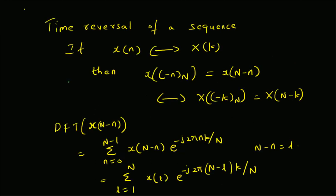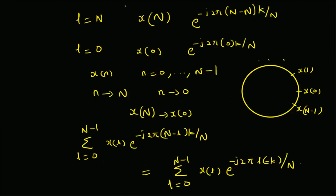To summarize: we have looked at the time reversal property of the DFT. Time reversal of a sequence x[n] which has DFT X[k] is defined by x[-n mod N], which equals x[N-n], and has DFT X[-k mod N] or X[N-k]. In the proof, we used the definition of the DFT and replaced N-n with l.